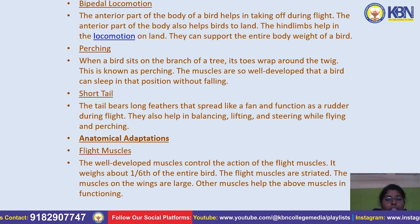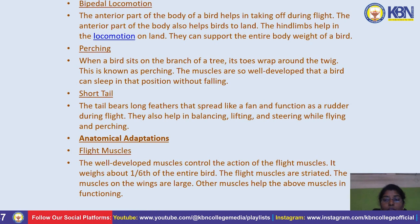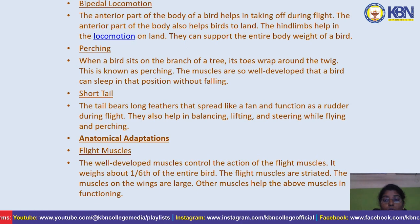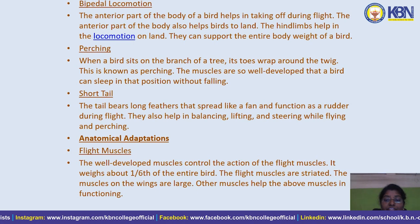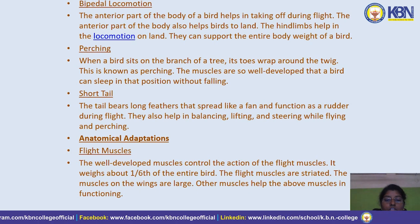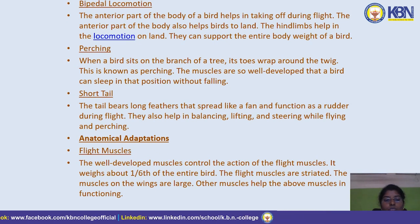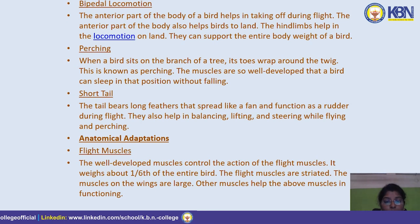Perching: when a bird sits on the branch of a tree, its toes wrap around the twig — this is known as perching. The muscles are so well developed that a bird can sleep in that position without falling. The tail bears long feathers spread like a fan and functions as a rudder during flight, also helping in balancing, lifting, and steering while flying and perching.